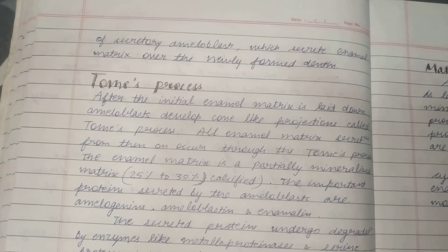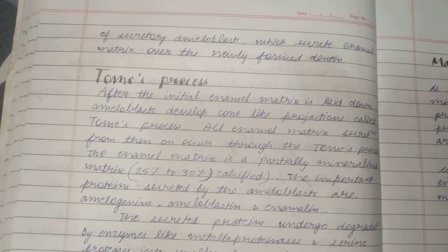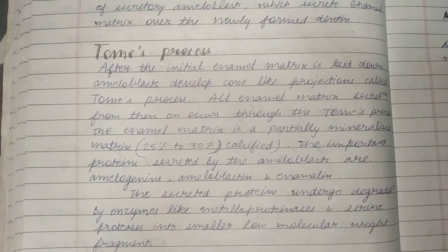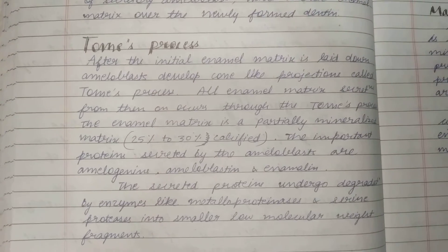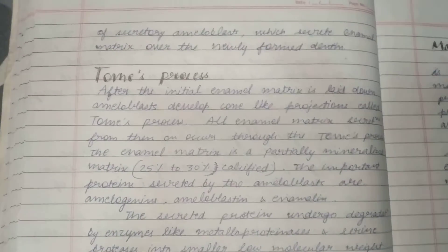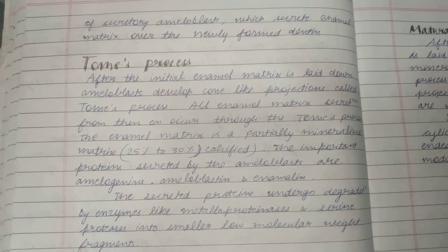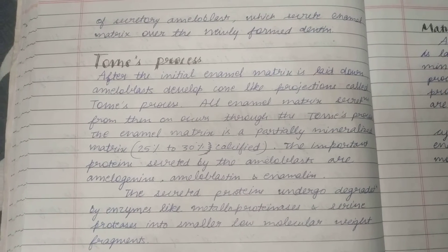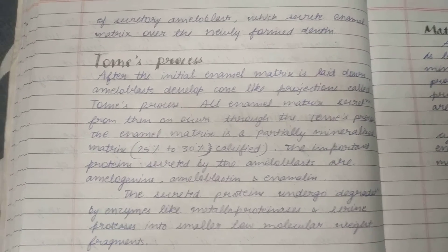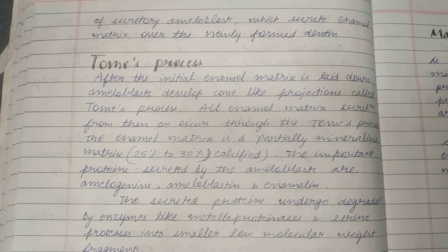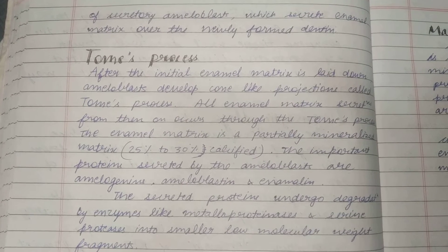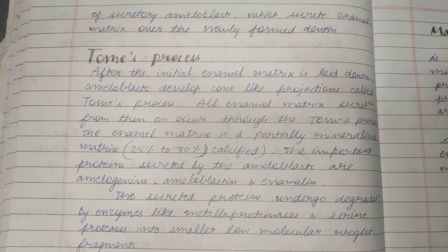Now the topic we talk about is the Tomes process. We have already talked about the Tomes process — they are pyramidal, blunt-shaped projections. After the initial enamel matrix is laid down, ameloblasts develop cone-like projections called the Tomes process. All enamel matrix secretions at the DEJ occur through the Tomes process.